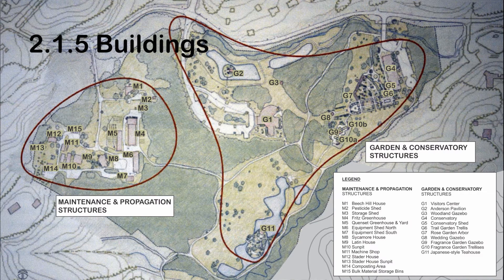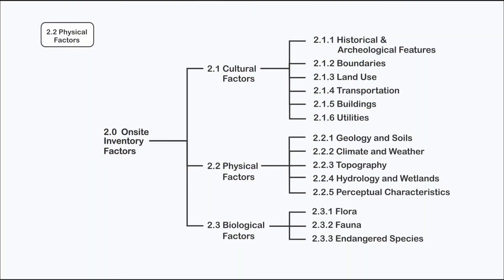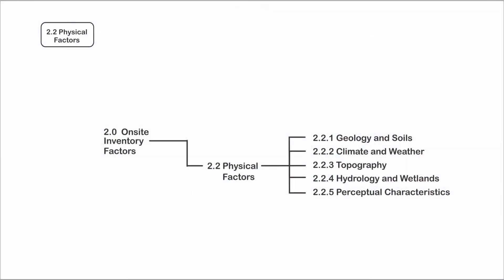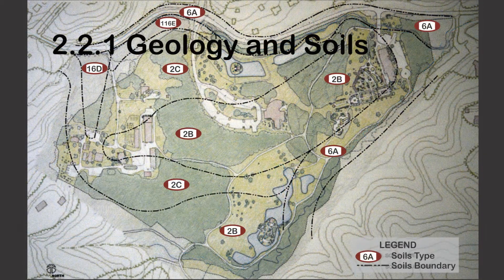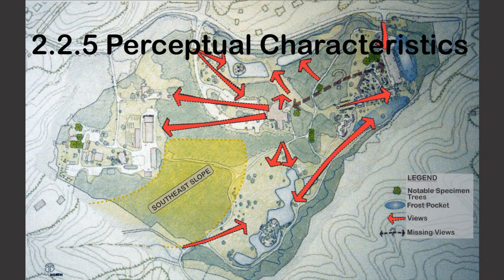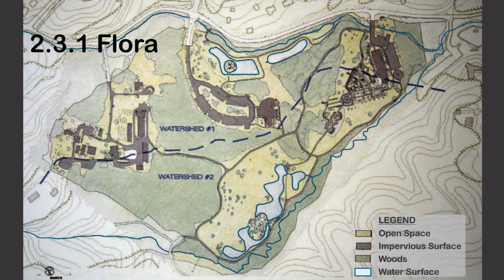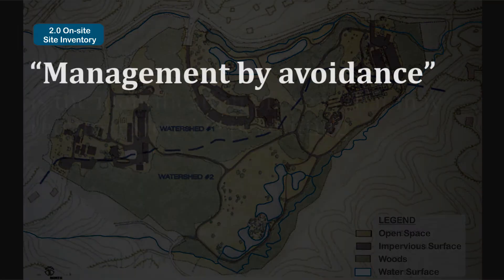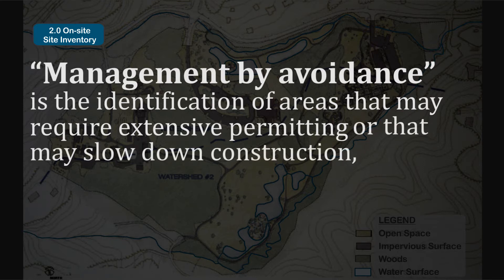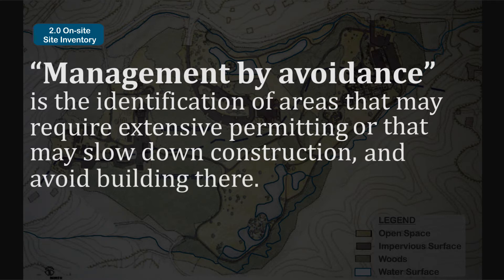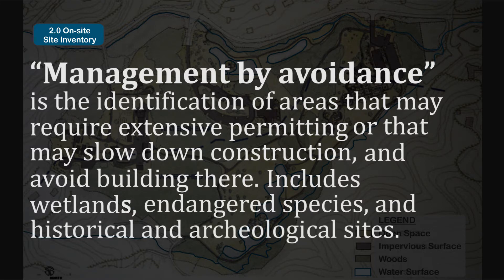Often the inventory of the cultural, physical, and biological factors is an in-depth assessment worthy of its own study. Physical features include the assessment of topography, hydrology, wetlands, and geology and soils. Biological factors focus on the assessment of the flora, fauna, and endangered species. Management by avoidance is the identification of areas that may require extensive permitting or that may slow down construction. Areas that may be avoided include wetlands, endangered species, and historical and archaeological sites.